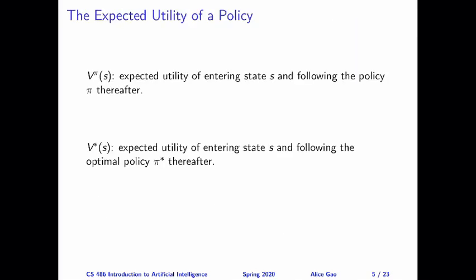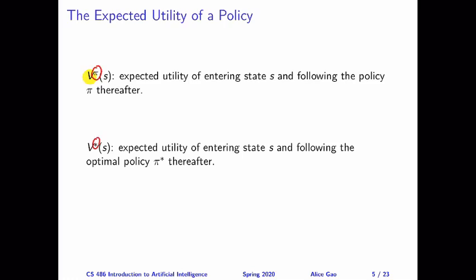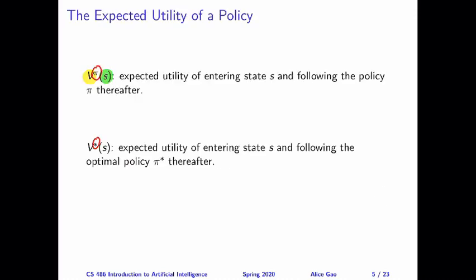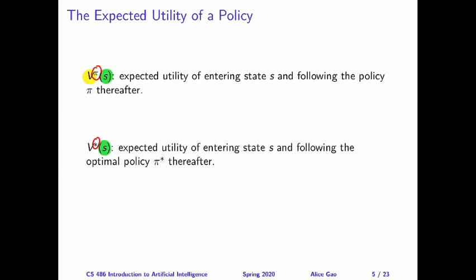Let me start by defining some notation. We will use capital V to denote the expected utility of following a particular policy. We'll use a superscript to denote what policy we are following. If the superscript is pi, that means we're following a given policy called pi. If the superscript is a star, that means we're following the optimal policy. You will also note that the capital V is a function of a state S. So this means that this expected utility that we're defining is really the expected utility of the robot by entering the state S first, getting the immediate reward for entering that state, and then following whatever policies given thereafter.